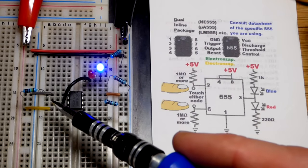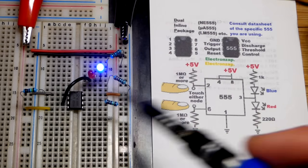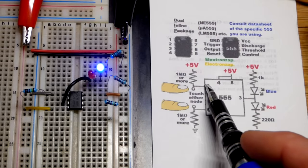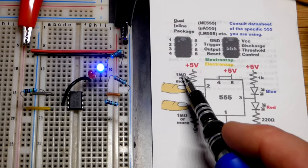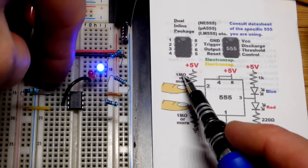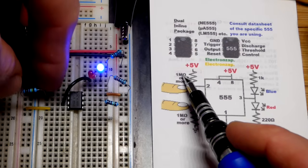You need a low enough voltage at pin 2, the trigger pin, in order to set the output high. We have a pull-up resistor, 1 million ohm resistor. You need a high-value resistor because my body cannot overpower it very easily.